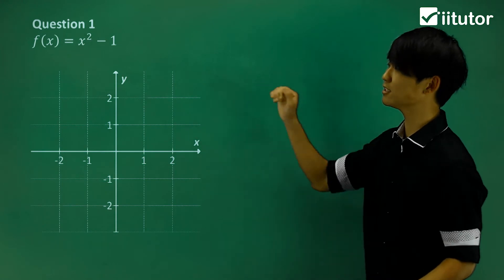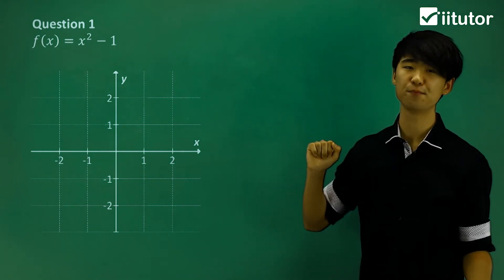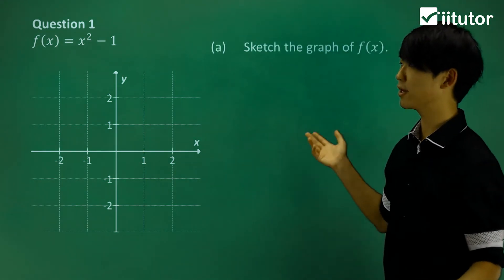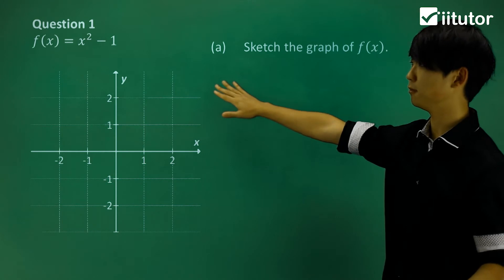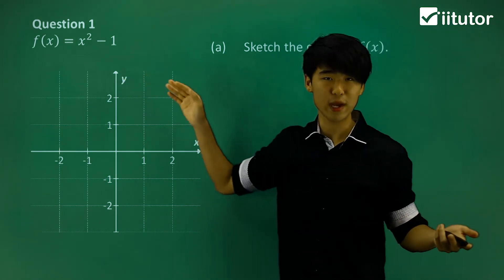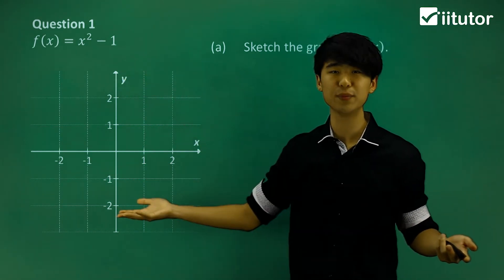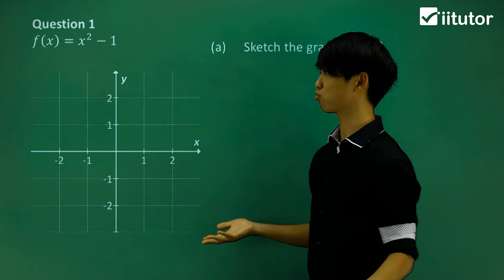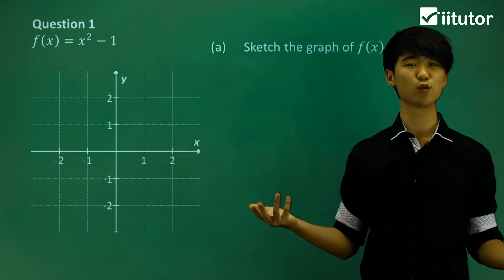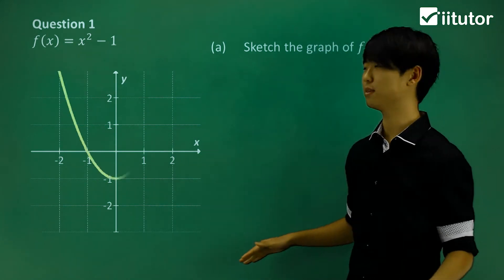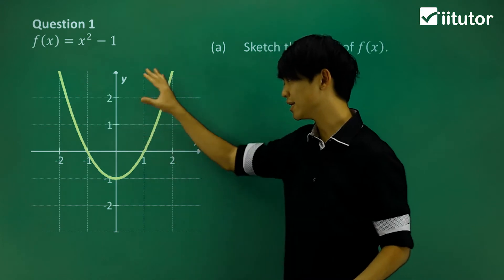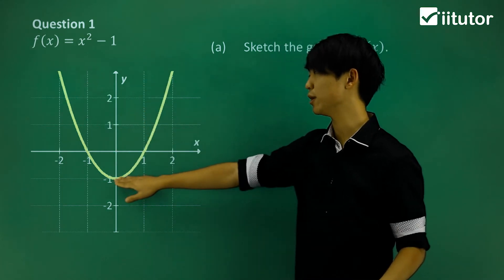We have f(x) = x² - 1. In part A, we're going to sketch it. Since we have x squared, it's going to be a parabola. If I want to draw x² - 1, it's going to be the normal parabola but shifted down one unit.